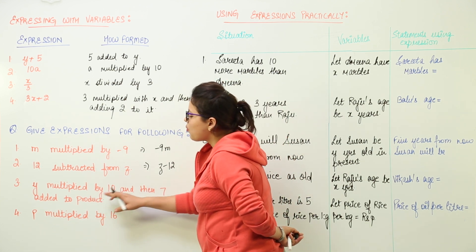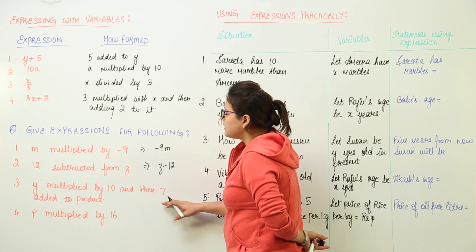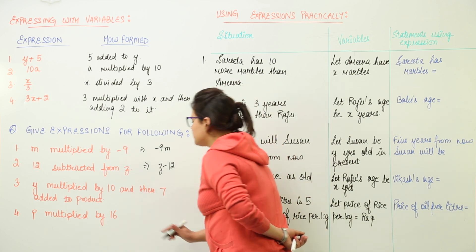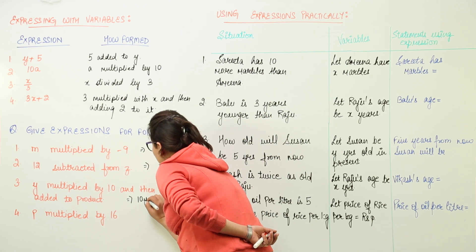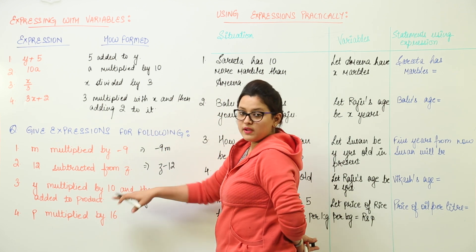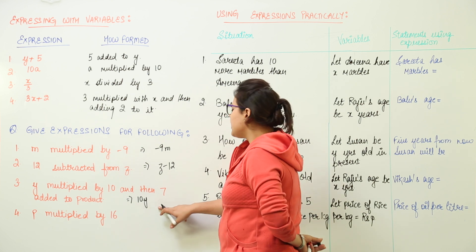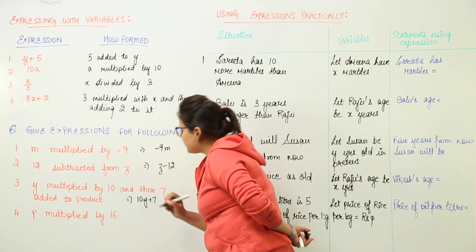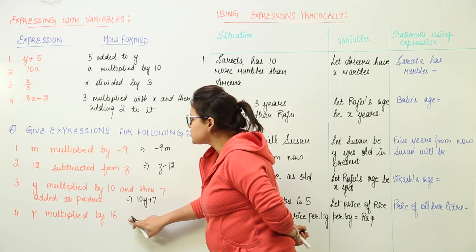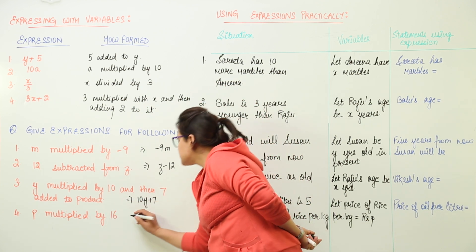Third is y multiplied by minus 10 and then 7 added to the product. So here we do 10 multiplied with y or here as it says y multiplied with 10. Both mean the same thing and to this we would add 7. The last one is p multiplied by 16.